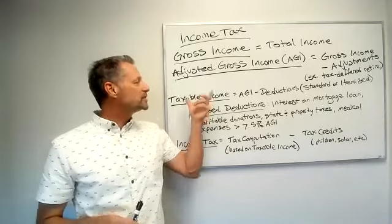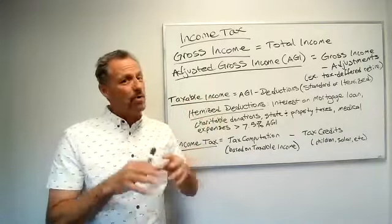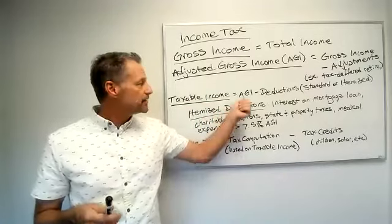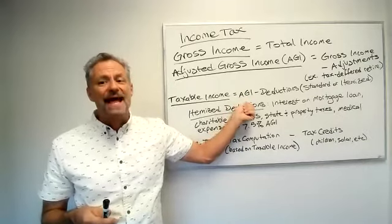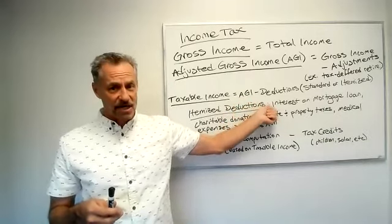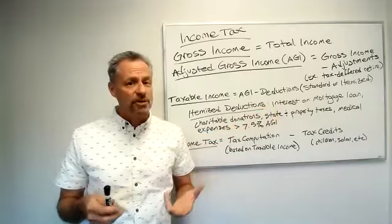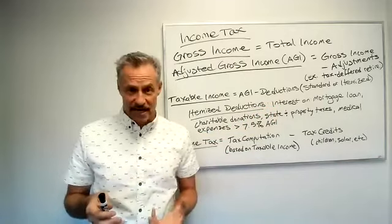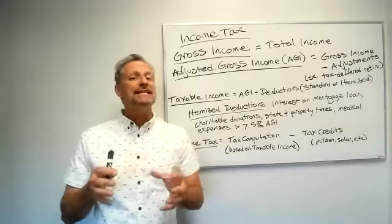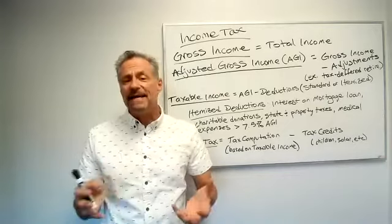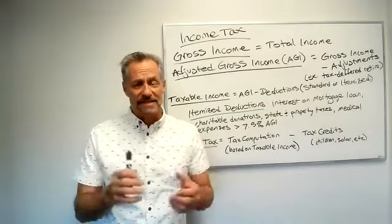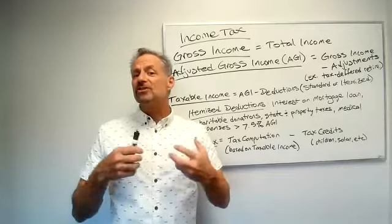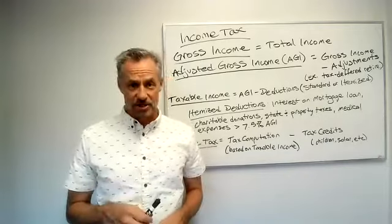So what goes into the taxable income, where the tax actually comes from? Well, we start with the adjusted gross income, and then what we do is we subtract out deductions. Deductions are one of two things. The government offers what they call a standard deduction — you can deduct a certain amount of money depending on your situation, which we'll see in the examples. Or if you think your deductions are more than that, you can itemize your deductions.